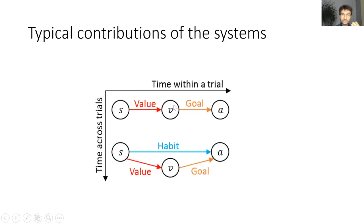Let me describe how these different systems contribute to decision-making in a typical task. At the beginning of training, the valuation system evaluates the current state and calculates the desired reward, and the goal-directed system computes the action to get this reward. As training progresses, the habit system learns to mimic the choices made by the goal-directed system. Actions are then jointly suggested by the habit and goal-directed systems, and their contribution depends on their level of certainty, or the precision of their beliefs.